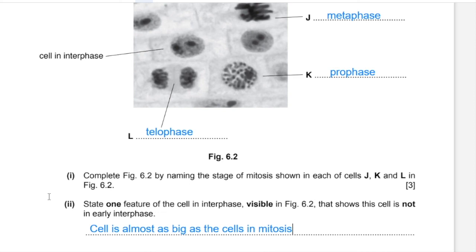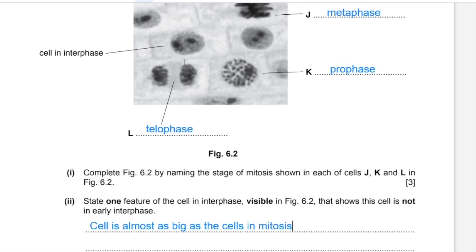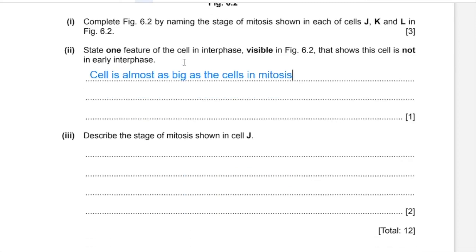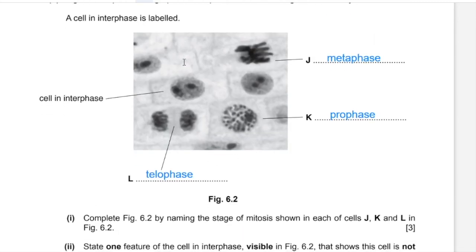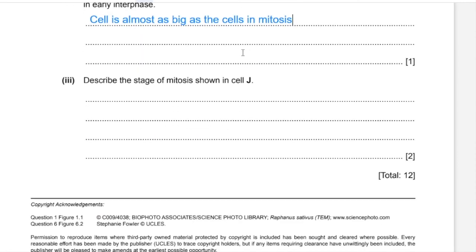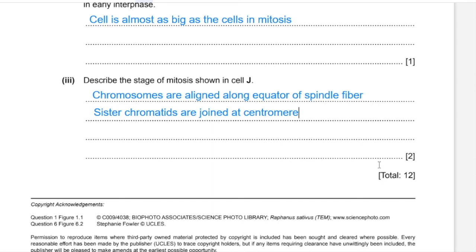In this answer you might be tempted to write that two sets of chromosomes are visible, but remember that although there are two sets of DNA in late interphase after S phase, they are only visible when chromatin condenses in prophase of mitosis. Part B(iii): Describe the stage of mitosis shown in cell J. The chromatids are lined up along the equator of the spindle, and sister chromatids are joined together at the centromere. And so this is it — we are done with this paper. Thank you for watching.